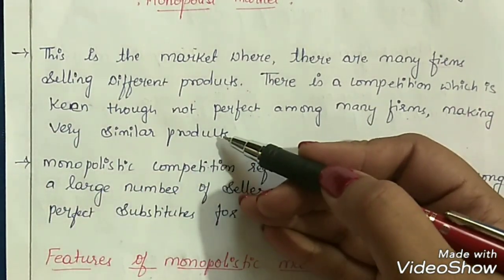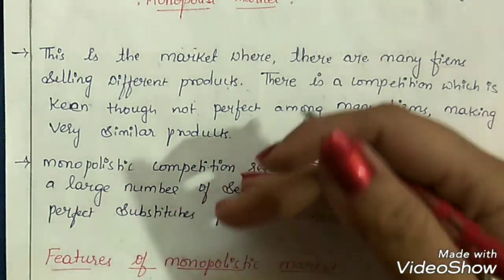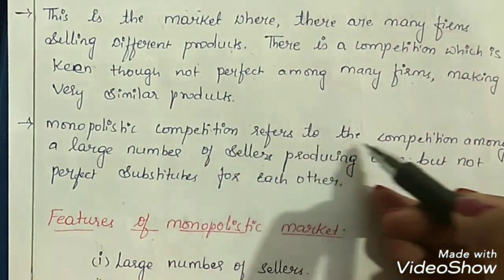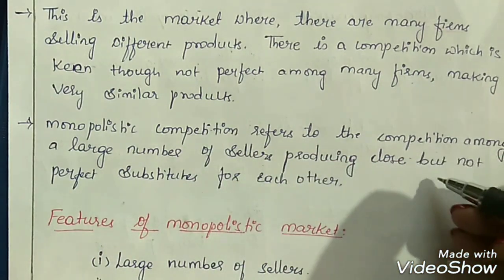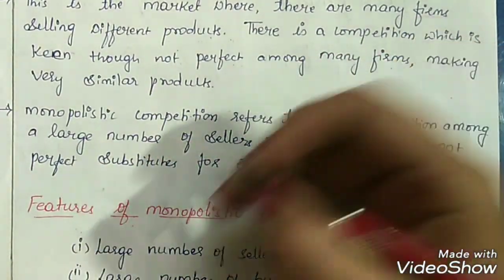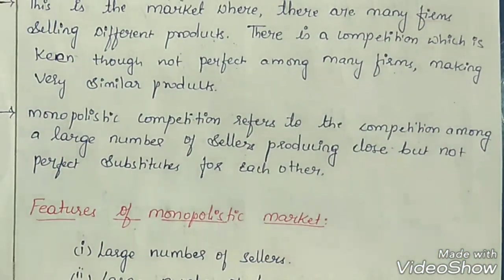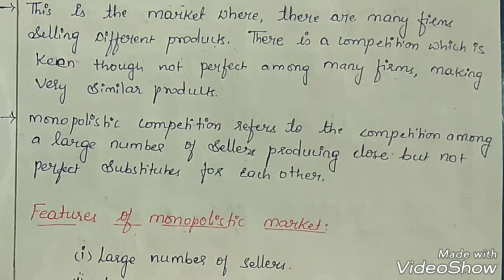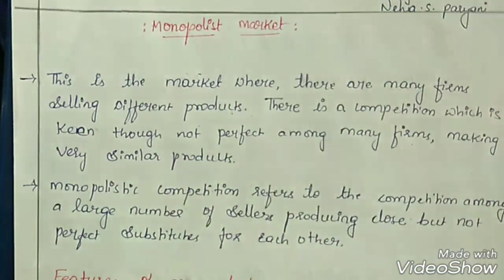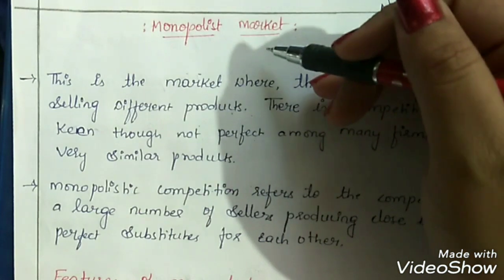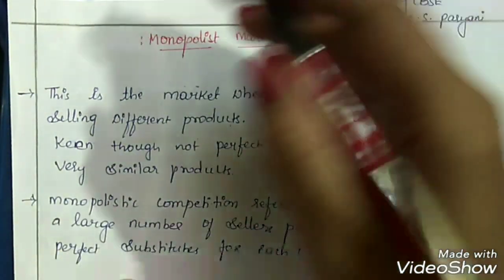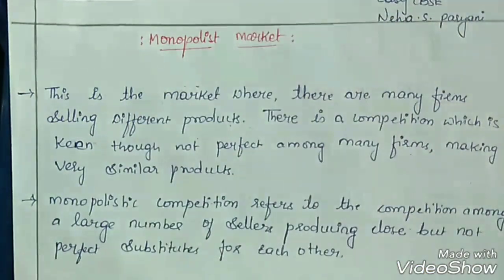The firms make very similar products, but they cannot be completely identical or homogeneous in nature. Monopolistic competition refers to the competition among a large number of sellers producing goods that are not perfect substitutes for each other. We also need to remember that the monopolistic market is a combination of monopoly form of market and perfect competition form of market.